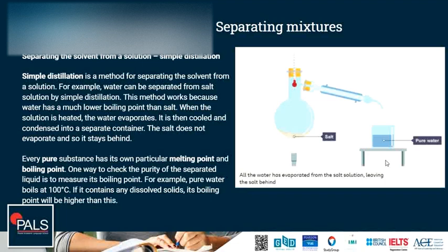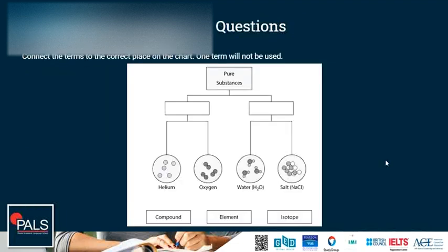That's it for the content. Let's have a look at a few questions. Connect the terms to the correct place on the chart — one term will not be used. On the left we see helium and oxygen; the particles in both cases are the same particles. Here we have individual atoms, here we have molecules. But since they are the same types of atoms in both cases, we have an element in the top left. The right side is a compound — we have different atoms chemically joined together to form molecules.